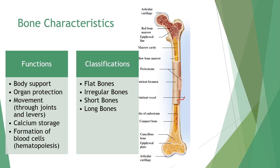Bones are classified according to their shape. Flat bones include the skull, ribs, and scapula. Irregular bones include the vertebrae. Short bones include the wrist and ankle. Long bones include the humerus, ulna, tibia, radius, fibula, and femur — these are the bones most commonly injured during sports and activity participation.